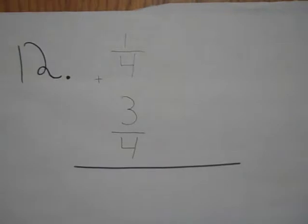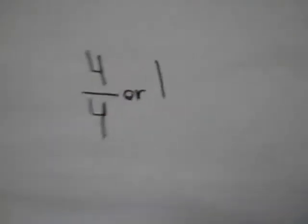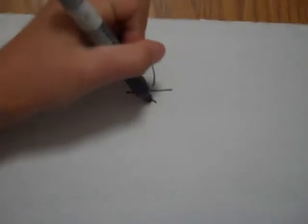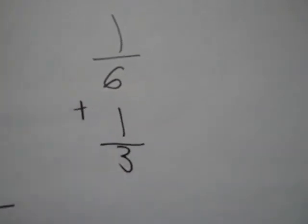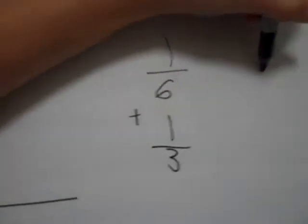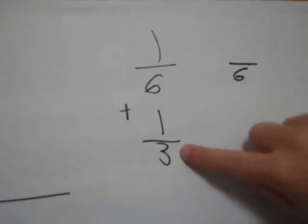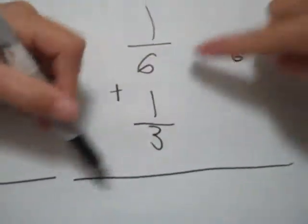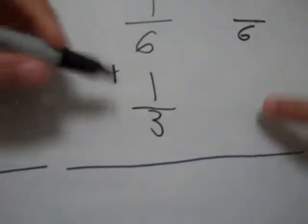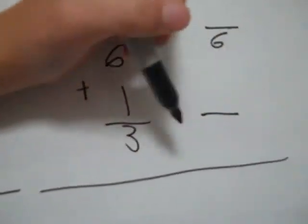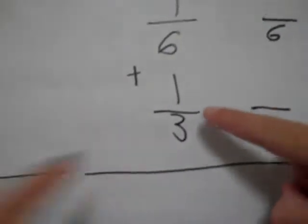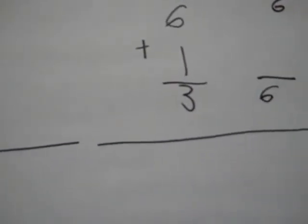Okay, and then the next one is one-sixth plus one-third. So we're going to have to make the denominators the same. Well, we know that six can be a multiple of three. So we have to put a line here, but six, then one-third would be the same as two-sixths, so we put a two here.